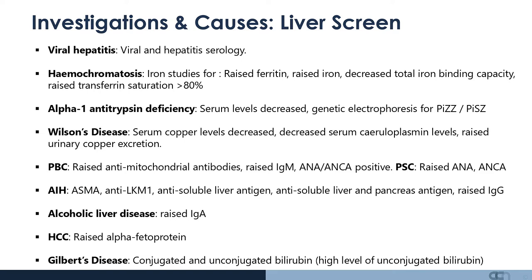Autoimmune hepatitis is associated with anti-smooth muscle antibodies, anti-liver kidney microsomal 1 antibodies, anti-soluble liver antigen, and anti-soluble liver and pancreas antigens. Alcoholic liver disease may show a macrocytic picture with thrombocytopenia and elevated IgA. Hepatocellular cancer would show raised alpha-fetoprotein, and in Gilbert's disease, elevated conjugated and unconjugated bilirubin levels would increase in a fasted state.